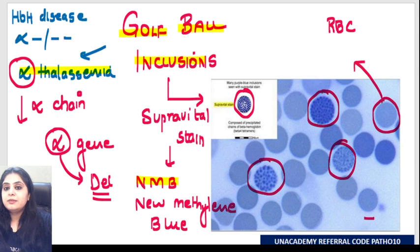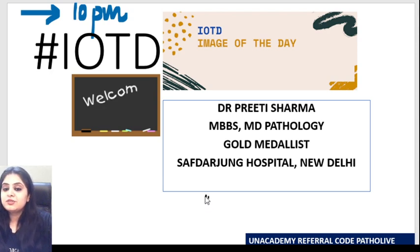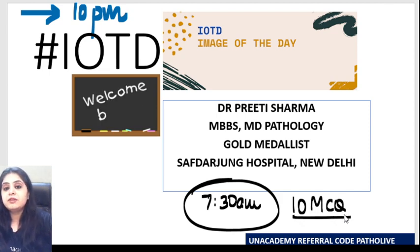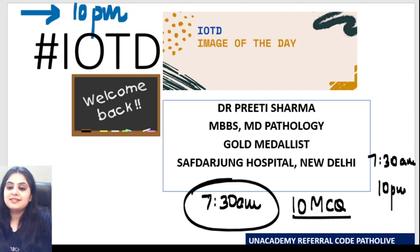To summarize: normal person has four genes; one deleted - asymptomatic; two deleted - trait; three deleted - HbH; all four deleted - Hb Barts. Not only is our image of the day done but a considerable amount of theory is also covered. Today morning at 7:30 AM we had a morning boost class on the YouTube channel - 10 MCQs discussed in detail over 50 minutes. See you tomorrow at 7:30 AM for a morning boost and at 10 PM for image of the day. Thank you and good night.